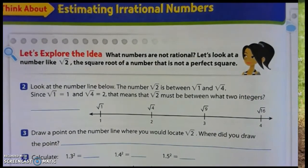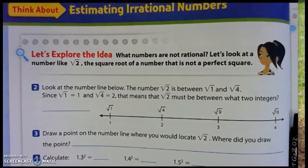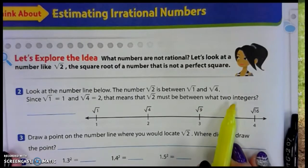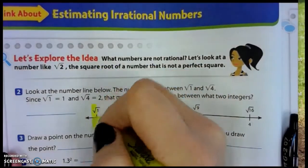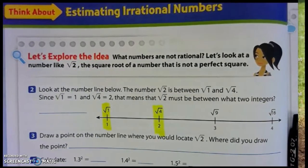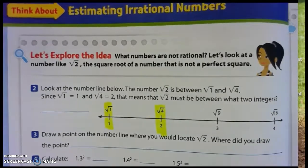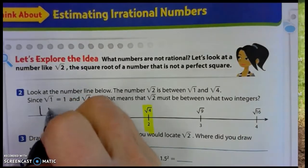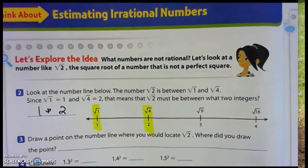What numbers are not rational? Let's look at a number like the square root of 2, the square root of a number that is not a perfect square. Since the square root of 1 is 1 and the square root of 4 is 2, that means that the square root of 2 must be between what two integers? Since the square root of 2 falls between those two numbers, then the square root of 2 has to be between 1 and 2.